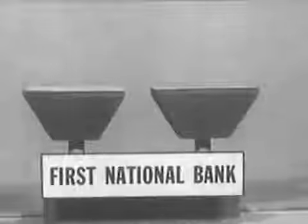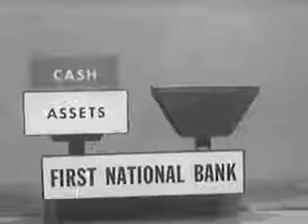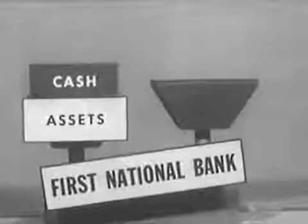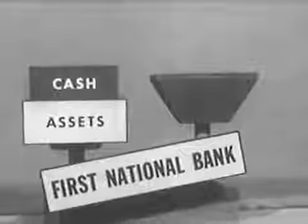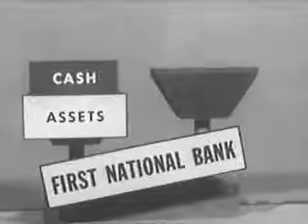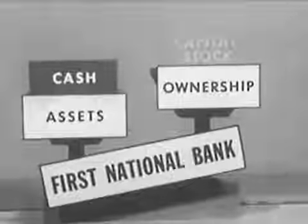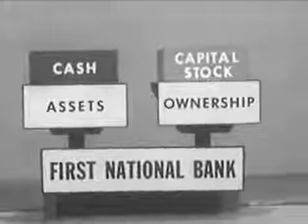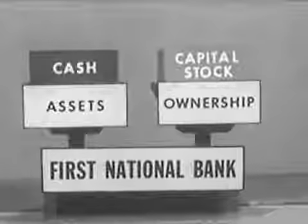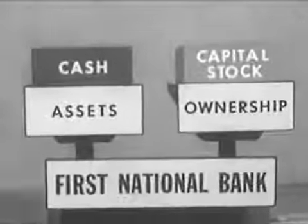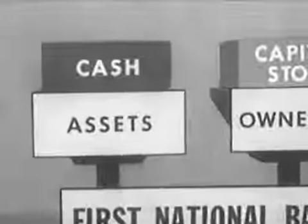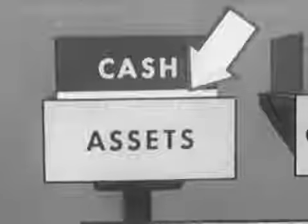Behind the scenes in the bookkeeping department, we'll be concerned with the bank's records of various depositors' accounts and with the bank's own balance sheet. When the bank started, its assets were only the cash contributed by the stockholders who organized the bank. This was balanced on the ownership side by the capital stock issued to the stockholders.